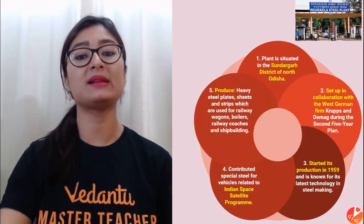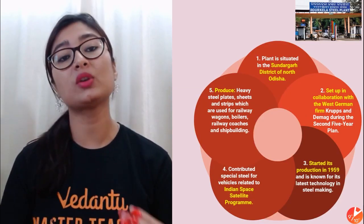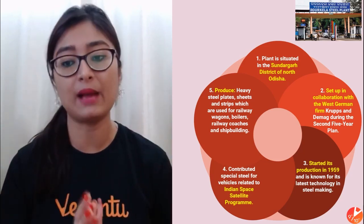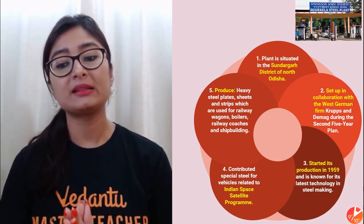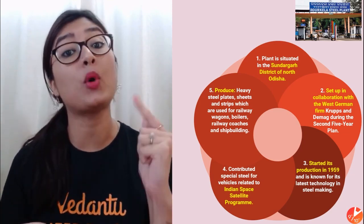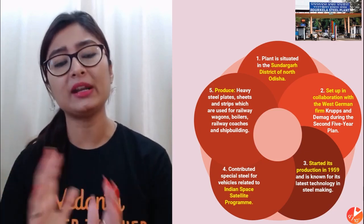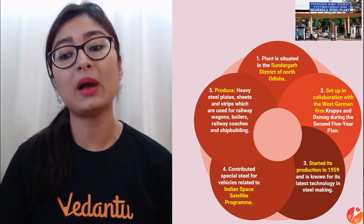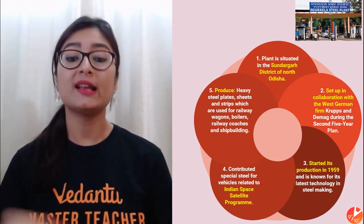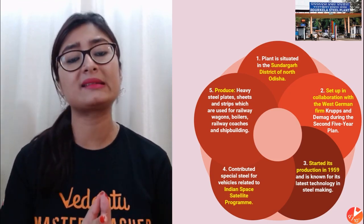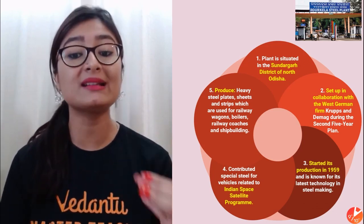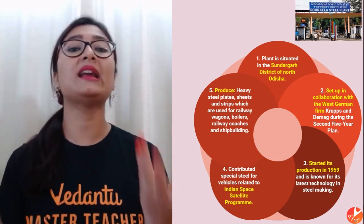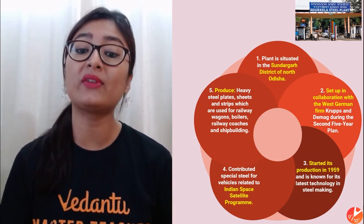Now we will move to Rourkela Steel Plant. It was set up in collaboration with a West German firm, situated in Sundargarh District of North Odisha, and started in 1959. A lot of new technology was used, which was very advanced. With German collaboration, advanced technology was not a problem. They have made contributions to Rourkela Steel Plant in special steel for vehicles related to the Indian Space Satellite Program. They also produce heavy steel plates, sheets, and strips which are used for railway wagons, boilers, etc.